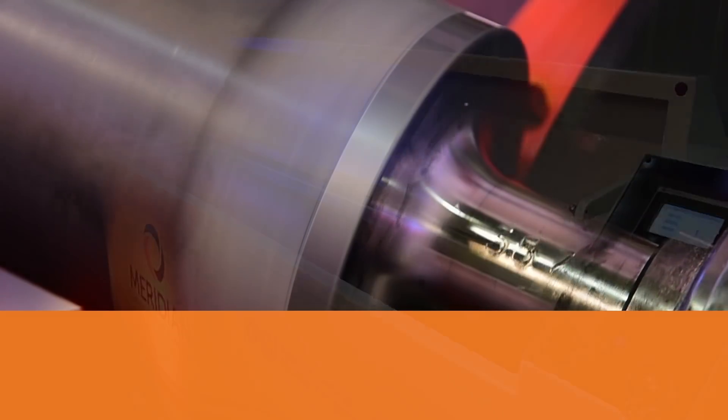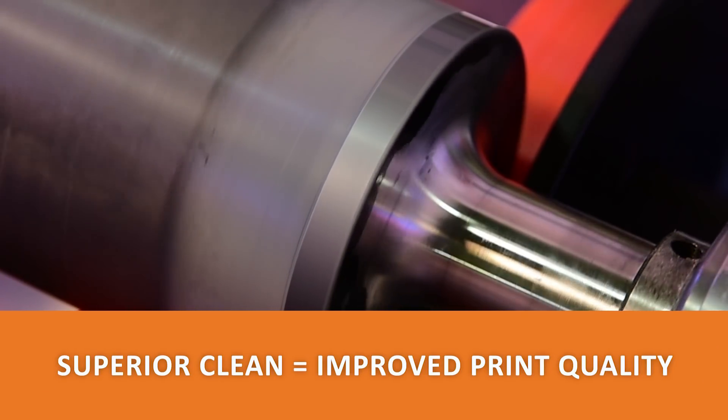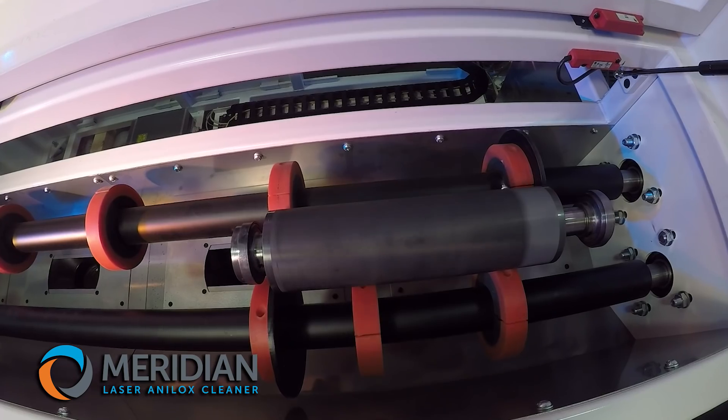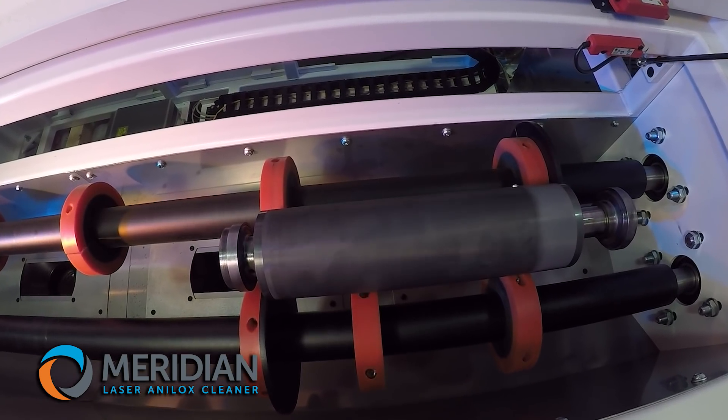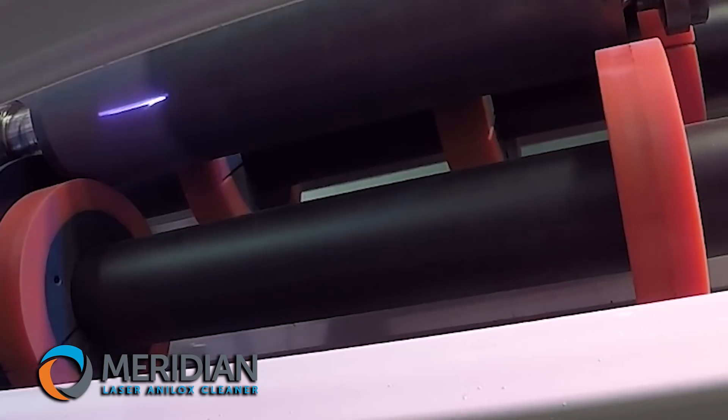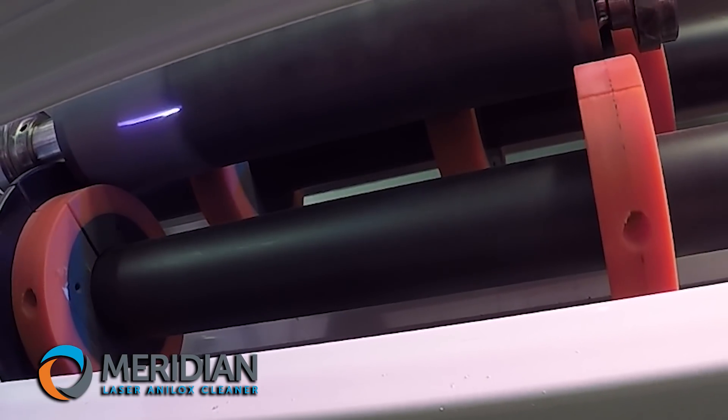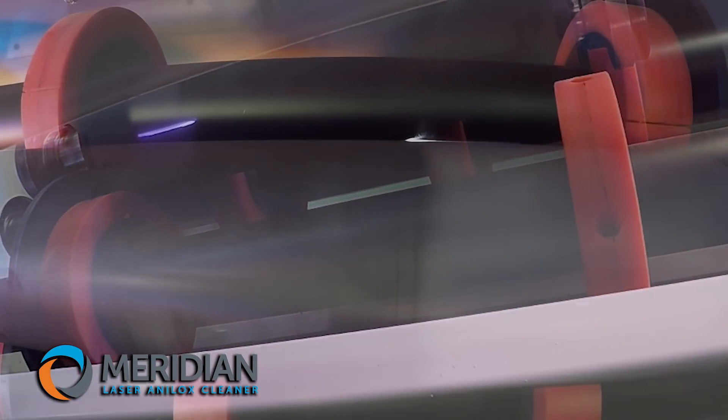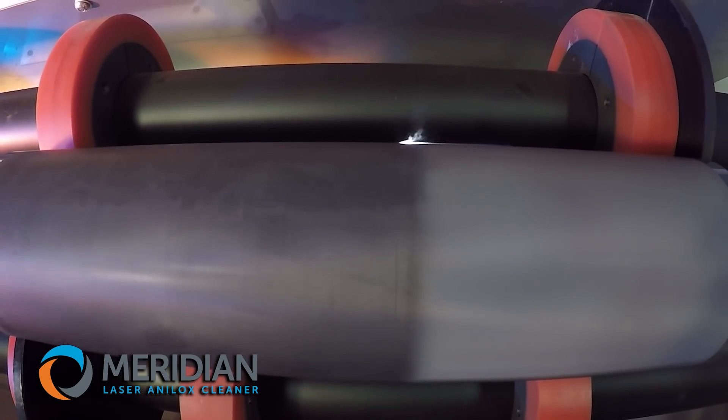Maintaining clean anilox is crucial to print quality. PCMC's Meridian cleans anilox cells using a powerful laser that vaporizes any deposited residue particles. It deeply cleans ceramic and chrome surfaces of any line screen without causing wear or damage.